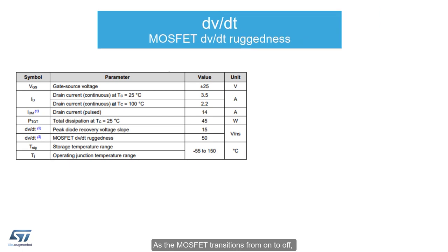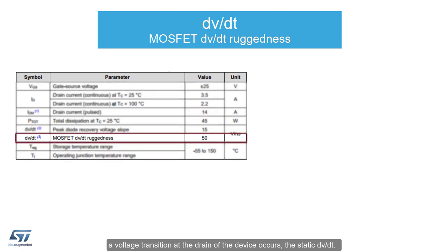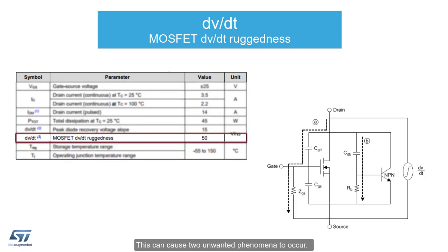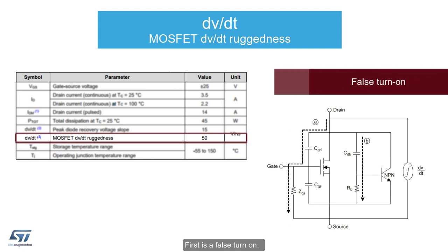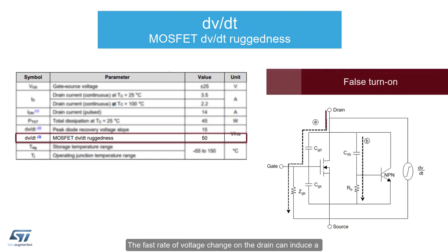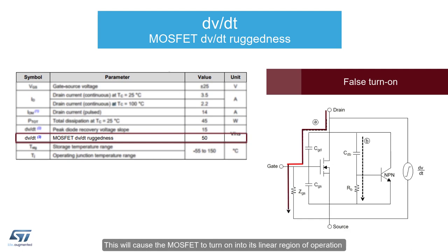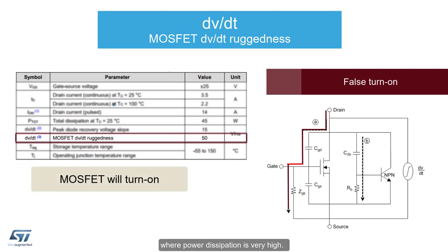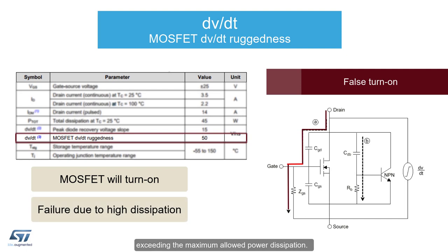As the MOSFET transitions from on to off, a voltage transition at the drain of the device occurs — the static dV/dt. This can cause two unwanted phenomena to occur. First is a false turn-on: the fast rate of voltage change on the drain can induce a displacement current through the internal gate-to-drain capacitance, so as to pull the gate voltage above its threshold. This will cause the MOSFET to turn on into its linear region of operation, where power dissipation is very high. If the effect is strong enough, it may cause failure by exceeding the maximum allowed power dissipation. However, this being an effect of many external variables, it cannot be specified as an absolute maximum rating.